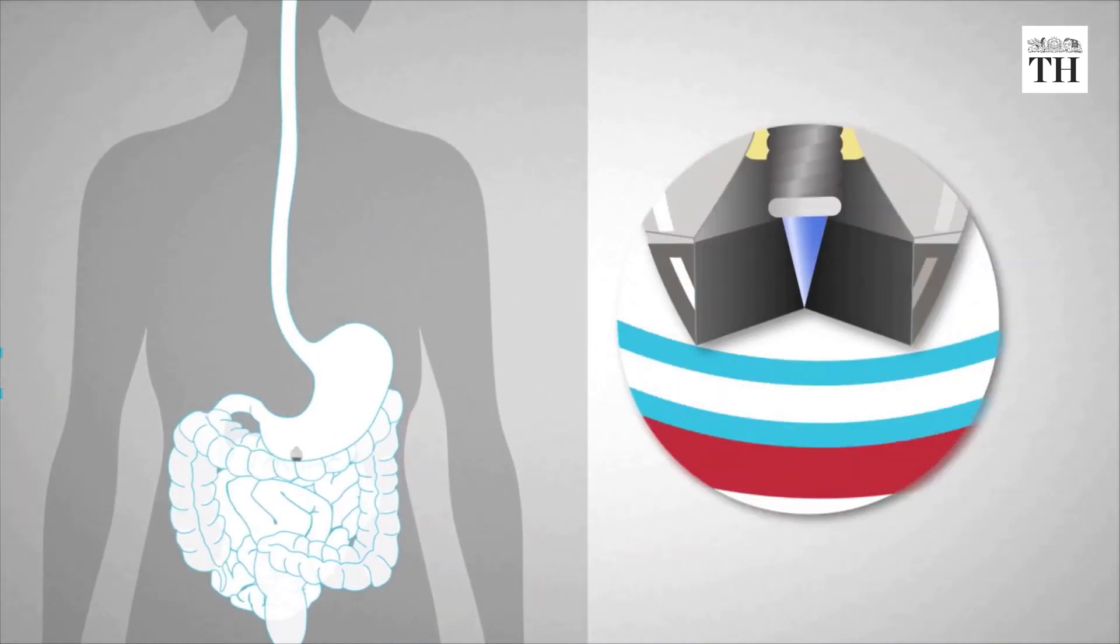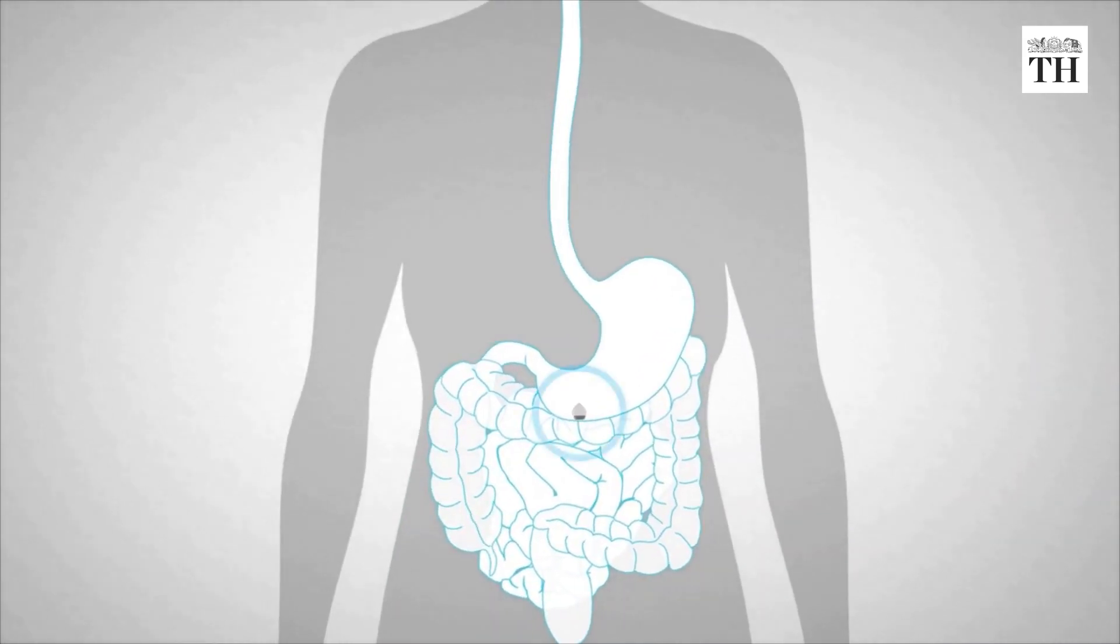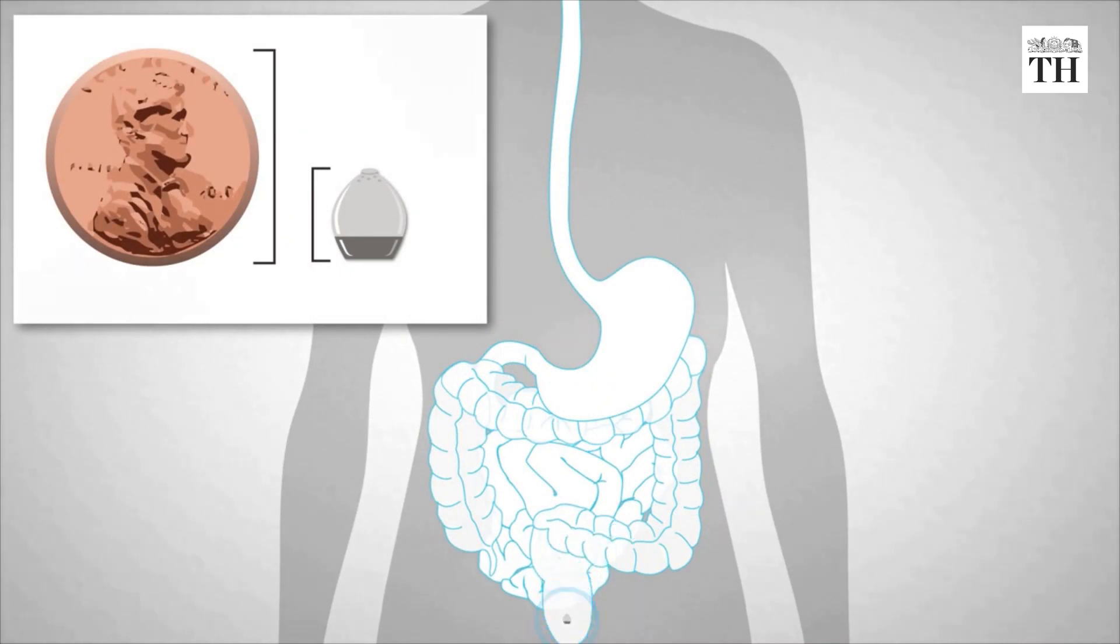The stomach wall's muscular tissue acts as a natural barrier and prevents the risk of perforation during drug insertion. After delivering the drug, the capsule passes safely through the body.